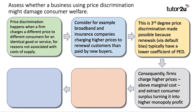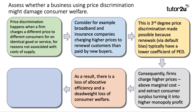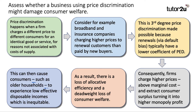We're using three concepts in one sentence. As a result — a nice connective word — there is a loss of allocative efficiency and a deadweight loss of consumer welfare. And this can then cause consumers, such as older households perhaps, to experience low effective disposable incomes, which is inequitable. So people who have been with the car insurance company for years pay a high renewal premium, leaving less money to spend. That's inequitable and damaging to consumer welfare.